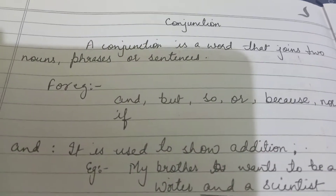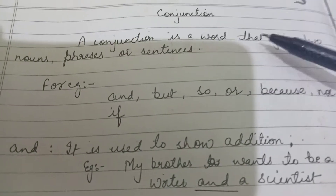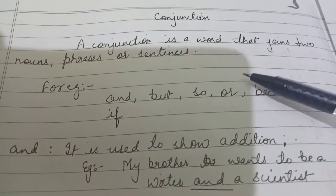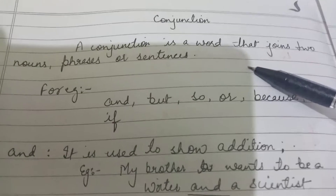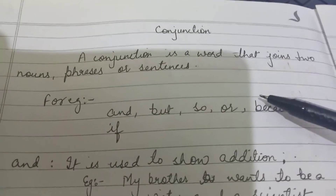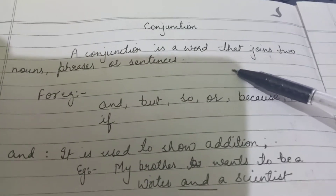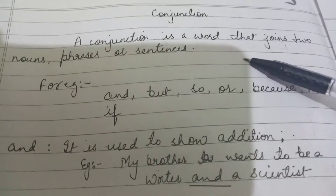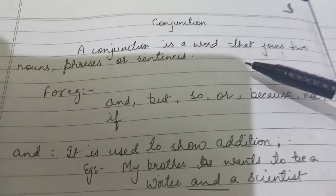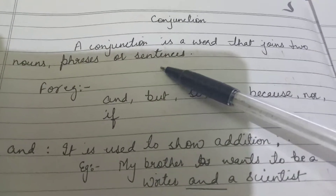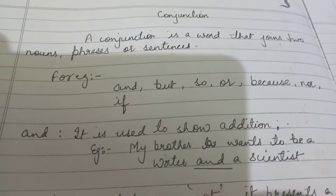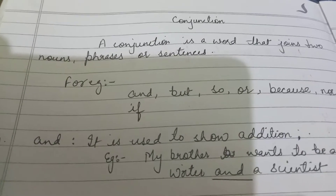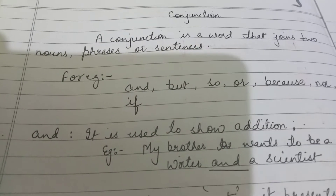Good morning children. Today we are going to start with a new chapter — that is conjunctions. By the name conjunction, it means that it is a word that joins two nouns, two phrases, or two sentences. In other words, we can also say that a conjunction is a way to shorten the sentence instead of writing two different sentences.